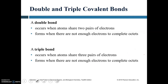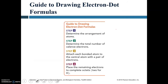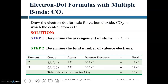A double bond occurs when atoms share two pairs of electrons. A triple bond occurs when atoms share three pairs of electrons. These multiple bonds form when there are remaining unpaired electrons that need to be accommodated. Let's look at drawing electron dot formulas for carbon dioxide.